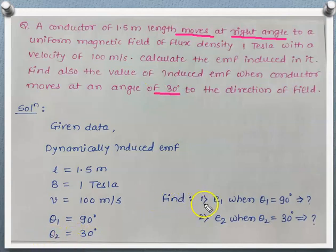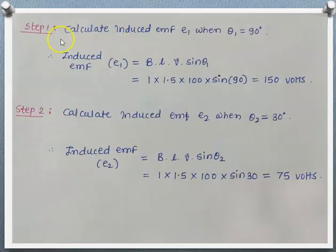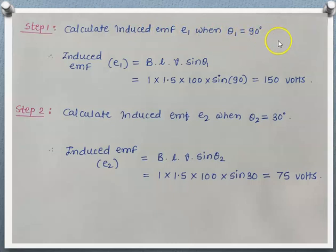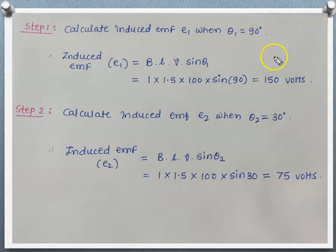We have to find E₁ when θ₁ = 90° and E₂ when θ₂ = 30°. Step 1: calculate the EMF induced when θ₁ = 90°, meaning the conductor is moving at right angles to the plane of flux. If this is the plane of flux, the direction of conductor motion is either upward or downward — perpendicular to the plane — making the angle between them 90 degrees.